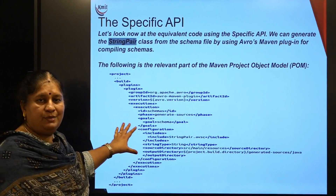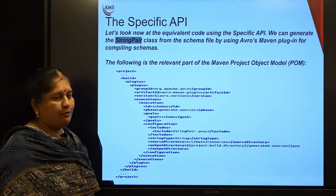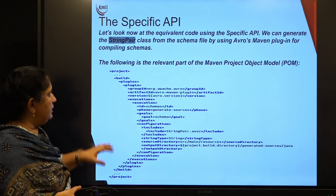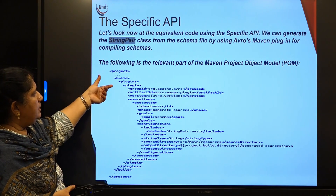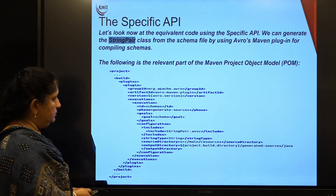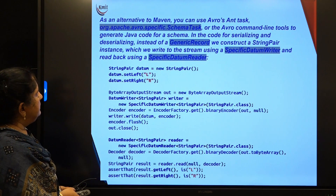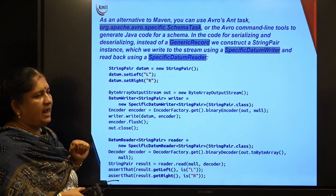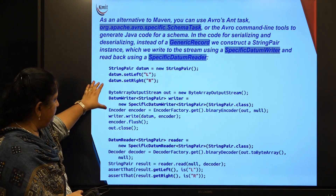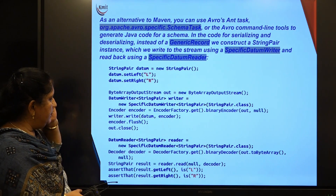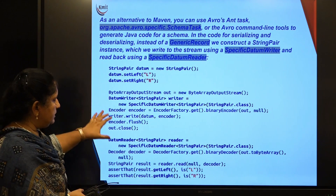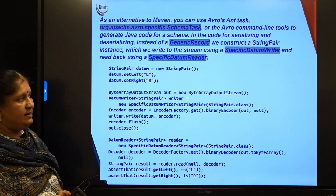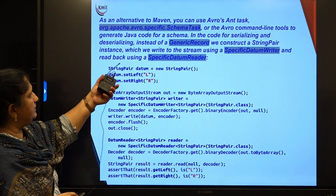I have taken an example from the textbook, which is written as a Maven project object model. I have used the same model and given you the example — they are trying to maintain the string pair under a Maven plugin. If I want to maintain it not with Maven but using Avro's ANT task, it will try to write the same thing. It is almost similar to Java syntax, so you can write the same kind of object definition using this. This is Avro's ANT task, which uses various types of objects.